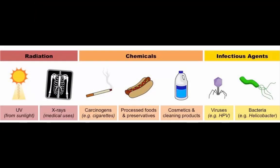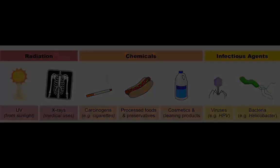Mutagens are chemicals and sources of energy like radiation that can cause mutations in DNA. Chemical mutagens are called carcinogens and include things like tar and tobacco. Energy sources like UV light and x-rays are also strong mutagens, but are not classified as carcinogens as they are not chemicals.